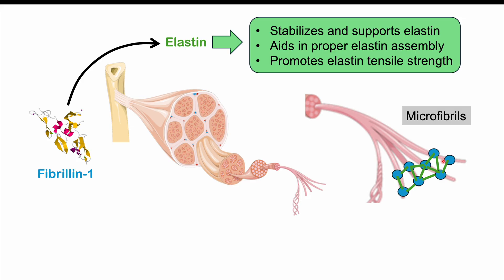If we don't have fibrillin 1, we won't have proper elastin functionality — we lose that ability of elastin to operate properly. Since elastin is found in many different places, this is going to lead to issues in places like the lungs, skin, arteries and veins, the musculoskeletal system, and the eyes. All these bodily systems are going to be affected in Marfan syndrome.